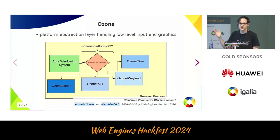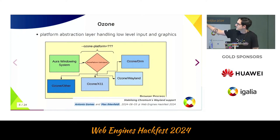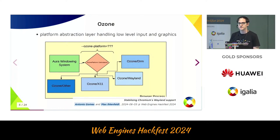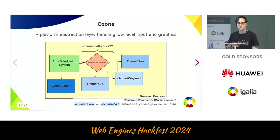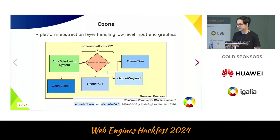You can see the three most important Ozone platforms that currently live upstream: Ozone Wayland, X11 which also runs via Ozone nowadays, and Ozone DRM which is mostly relevant for Chrome OS. And now Antonio is doing the history lesson.